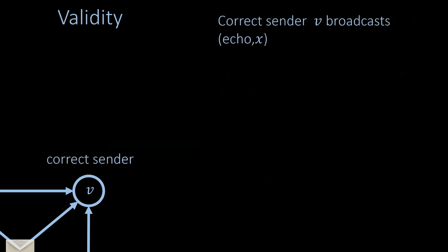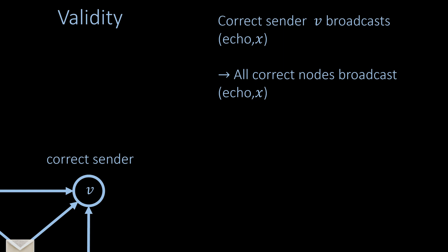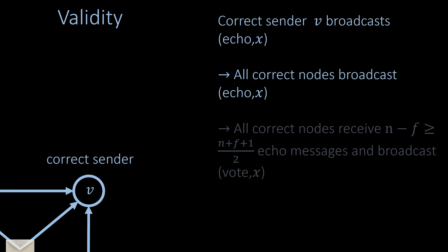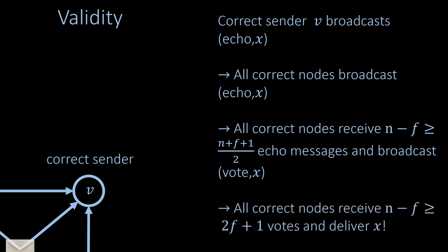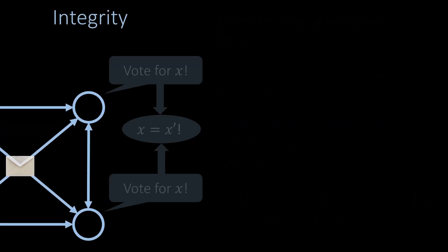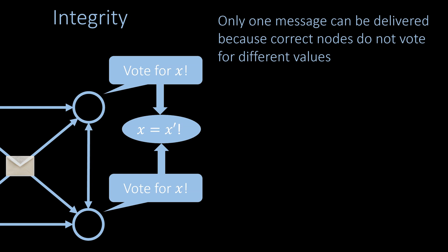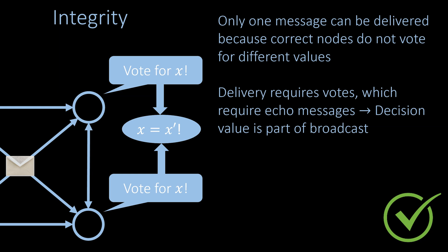It is easy to see that the validity property holds too. After the correct sender broadcasts echo messages, all correct nodes broadcast echo messages as well. Eventually all correct nodes receive at least n - f echo messages, which is at least (n + f + 1) / 2 if f is strictly less than n / 3. Finally, all correct nodes receive at least n - f votes for the sender's value and so all correct nodes deliver this value. As far as the integrity property is concerned, we have already shown that correct nodes only vote for one value, so it is not possible for two values to receive sufficiently many votes to be delivered. Moreover, it is clear that votes require echo messages, which means that any delivered value must come from an execution of the reliable broadcast algorithm.